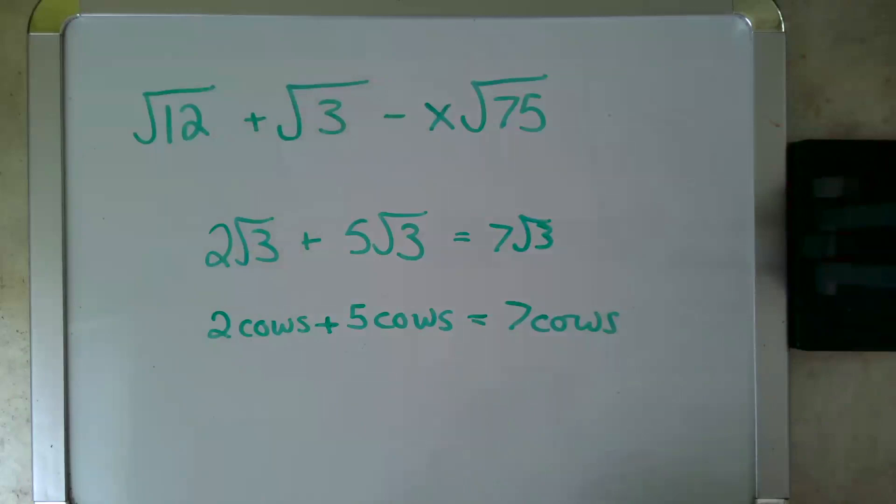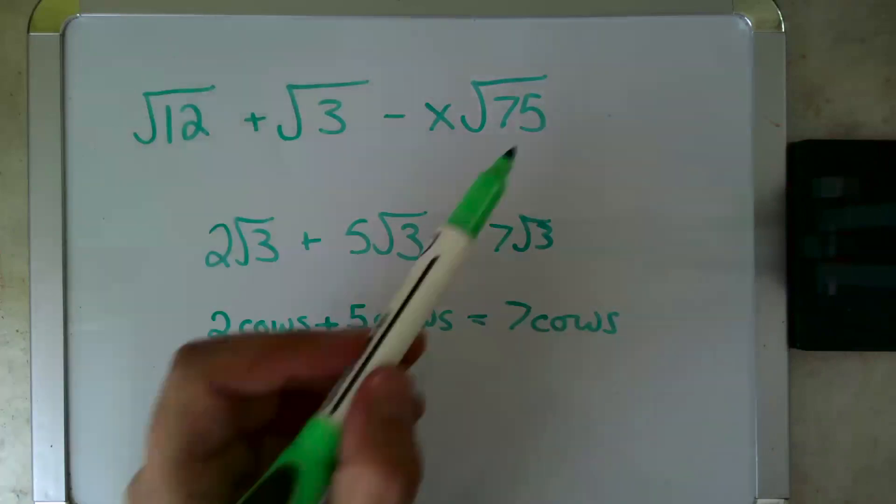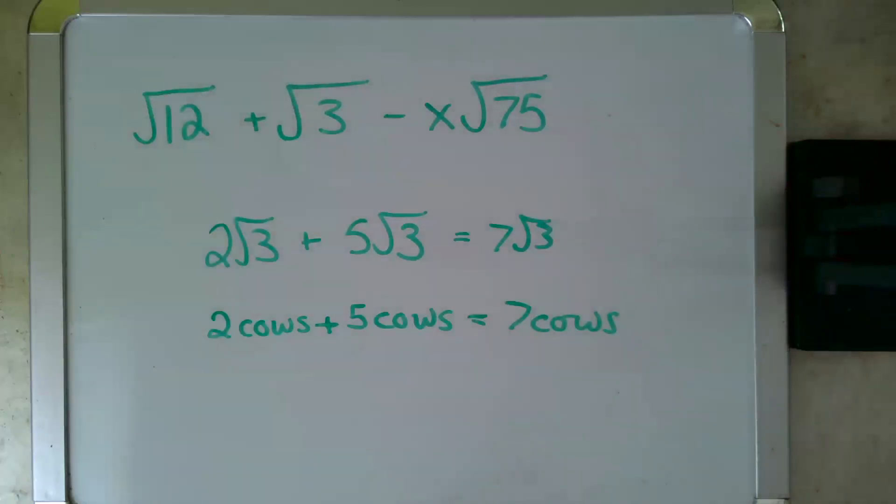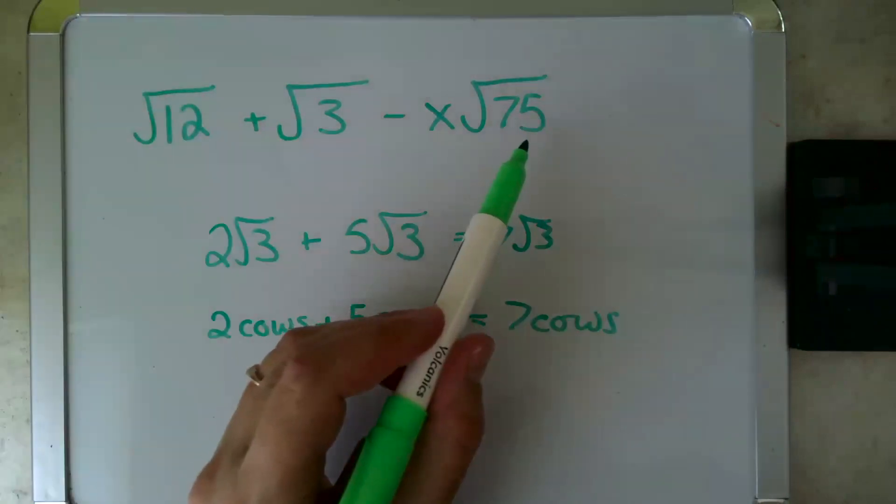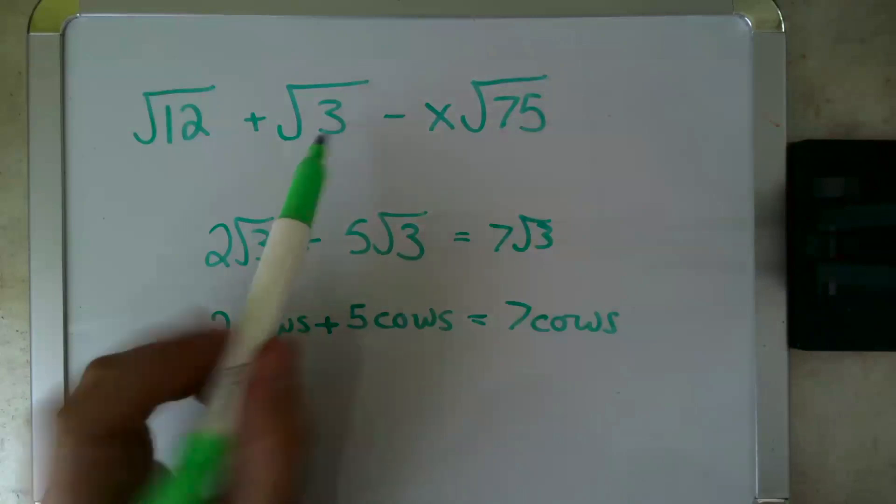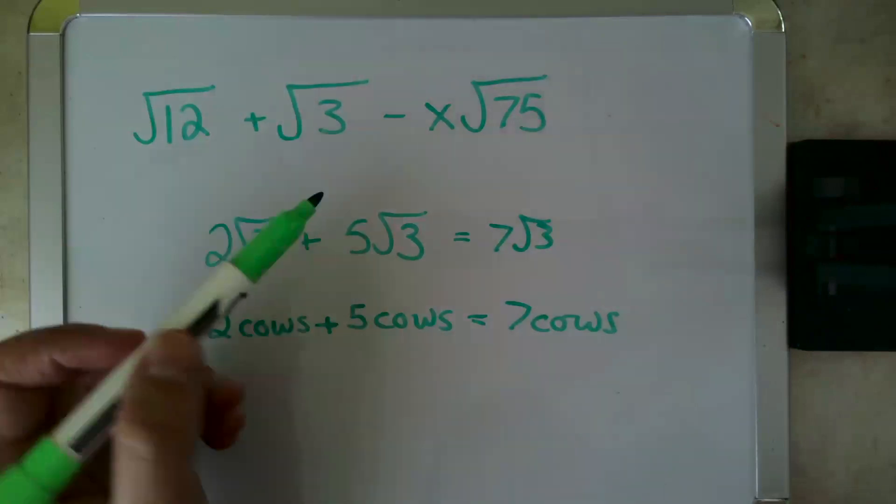All right, now our problem has a root 12, a root 3, and a root 75. So our first step is going to be to simplify the root 12 and the root 75. The root 3 can't be simplified any further. 3 is as low as it goes.